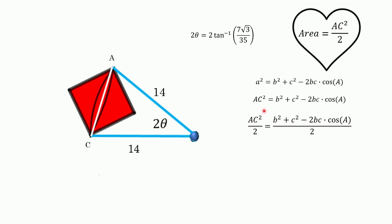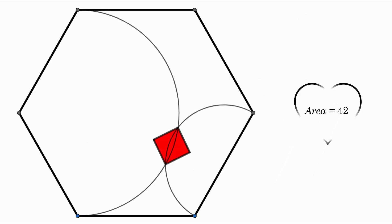So B and C are both 14. 2 theta is 2 arctangent, 7 root 3 over 35. So if we plug everything in, it's a little bit of calculator work. Not too bad, though. You end up with 42. How sweet is that? Man, I've got to tell you, that really made me smile when I saw the answer was 42.